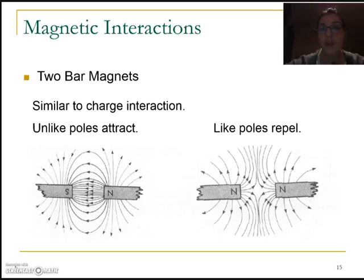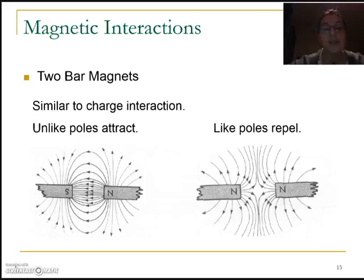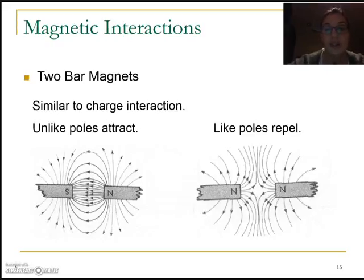Hi guys, welcome to the last one of our video series about electric and magnetic fields. Today we're going to be having a look at the interaction of currents when they're in a magnetic field, and looking at being able to calculate the magnetic field strength. We've had a look at how to calculate the electric field strength, and basically we'll go through a new formula that helps us calculate magnetic field strength.